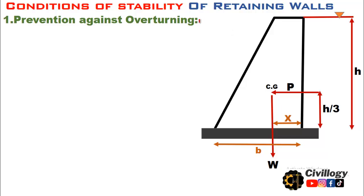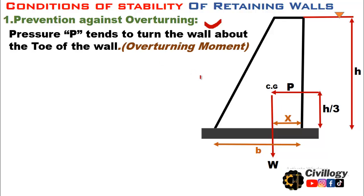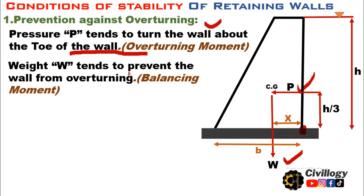First condition is prevention against overturning. As discussed previously, there are basically two forces: the horizontal pressure P and the weight W, or self-weight of the retaining wall. Pressure P tends to turn the wall about the toe of the wall, which can be called the overturning moment. So pressure P tends to rotate the wall about the toe of the retaining wall.